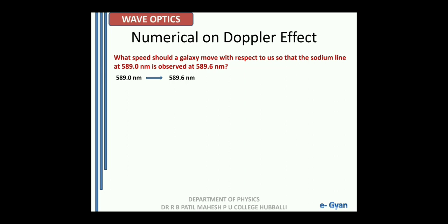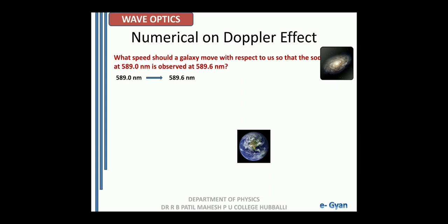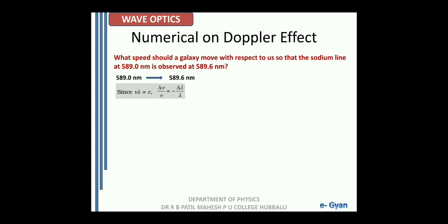Since the wavelength is increasing, the motion between us and the galaxy should be away from each other. Since the galaxy moves away, we know that the product of frequency and wavelength is equal to velocity. So the change in frequency to the original frequency is equal to change in wavelength to the original wavelength. This is because as frequency increases wavelength decreases and vice versa. Here nu is frequency, delta nu is change in frequency, lambda is wavelength, and delta lambda is change in wavelength.